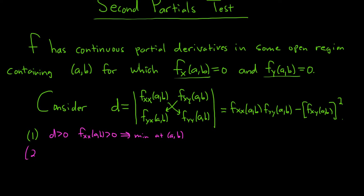Case two: if little d is positive and f_xx at (a,b) is less than zero, then you have a maximum at (a,b). The way to memorize it is it's backwards: positive gives a min, negative gives a max.